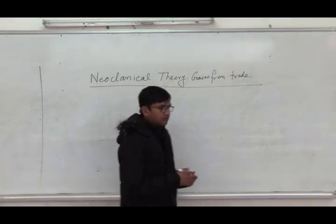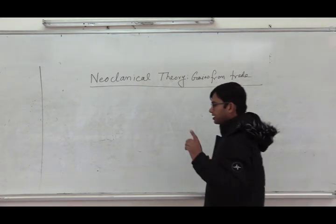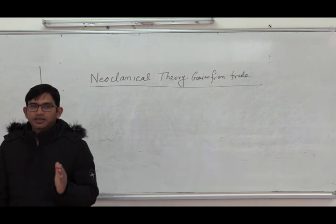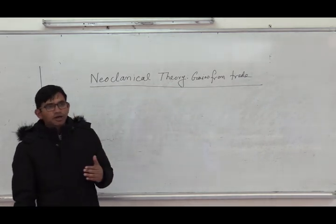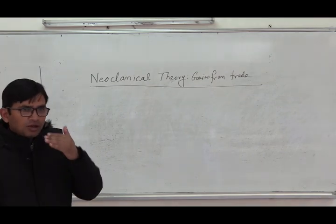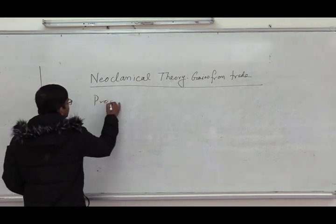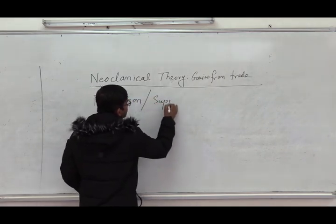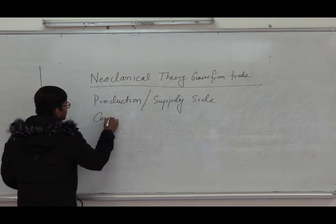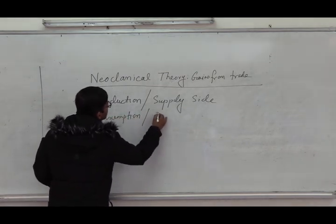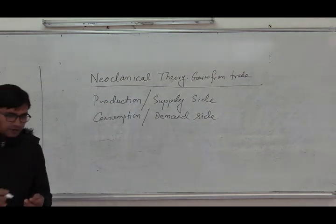In neoclassical theory we will analyze the gains from trade with the help of both demand and supply sides. The Ricardian model is a supply-side model that considers only the production side and opportunity cost. In neoclassical theory we will look at the autarchic equilibrium and how a country can reach gains from trade. In order to reach equilibrium there are two sides: number one, the production or supply side, and second, the consumption or demand side.